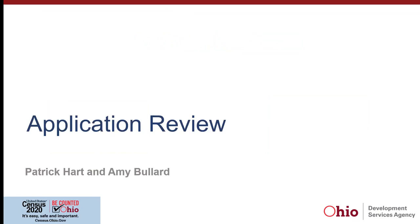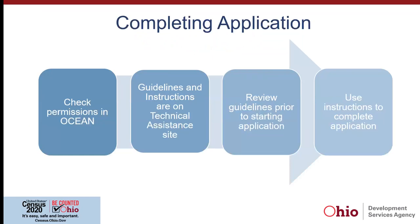We're going to go over the application. My advice is to be very systematic and thorough — this way you won't run into any problems. The first thing you want to do is check your permissions in Ocean, and make sure you have a valid Ocean account because some people's passwords may have expired. The permissions you need are permission to start the application and permission to submit it. Make sure the person submitting the application has the correct role in Ocean. Guidelines and instructions are on the technical assistance site — the link will be provided later in the training.